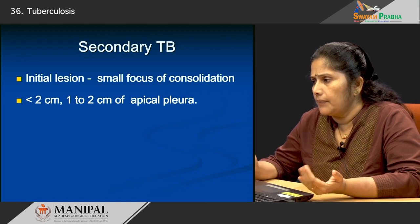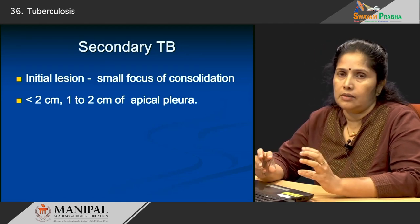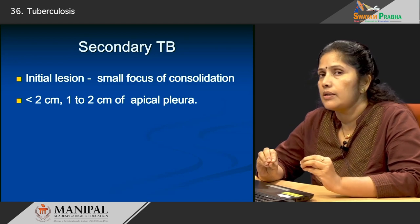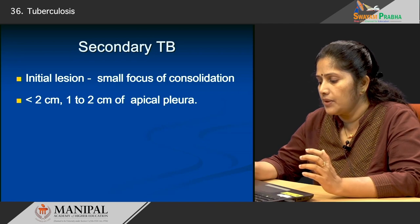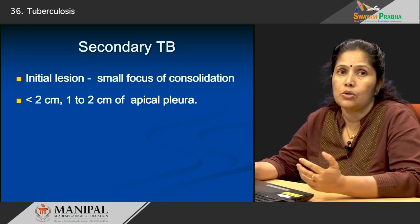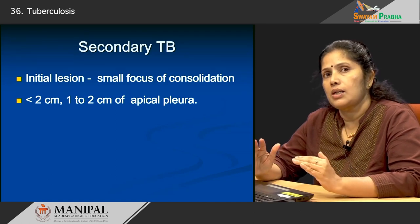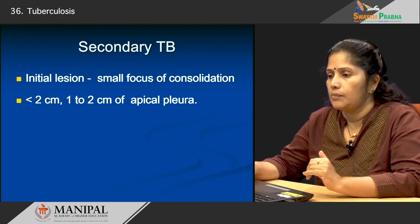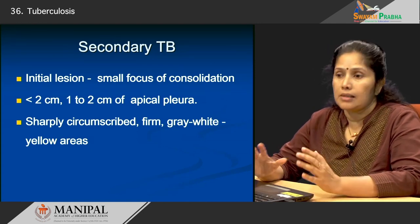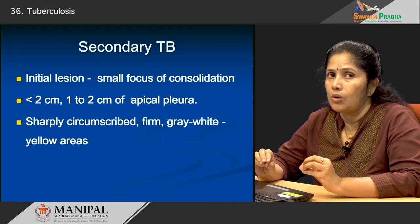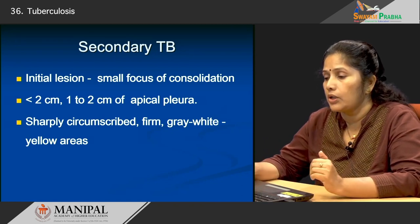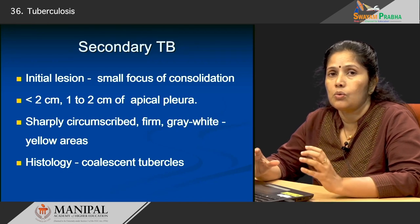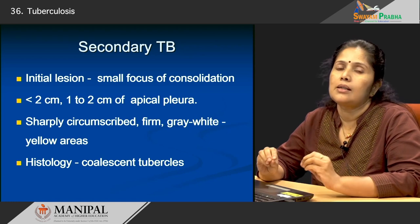The initial lesion starts as a very small focus of consolidation in the lung. From there the lesion can become more than 2 centimeters and is again very close to the apical pleura. The lesion is quite well circumscribed, grey-white or slightly yellowish in color because of the necrotic areas. In histology, as discussed in primary tuberculosis, these patients show the classic diagnostic finding: the granuloma.